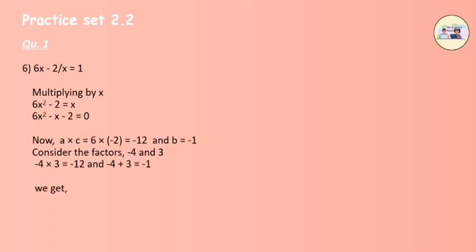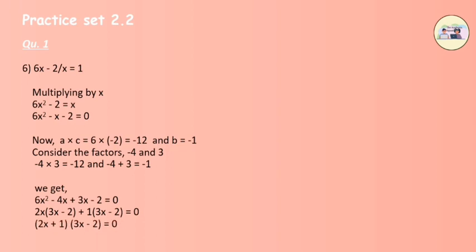Therefore, 6x squared minus 4x plus 3x minus 2 equals to 0. Now divide it into 2 groups and take common factors. After taking common, we get the factored equation as (2x + 1)(3x minus 2) equals to 0.